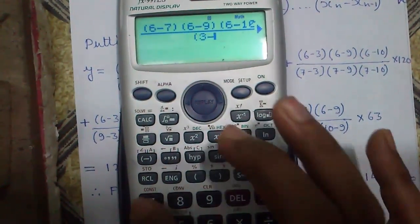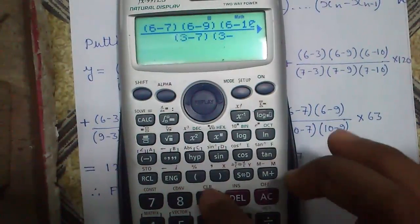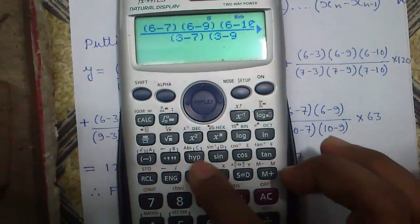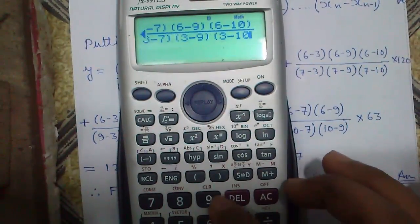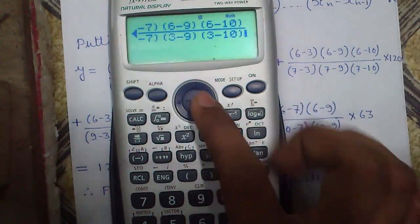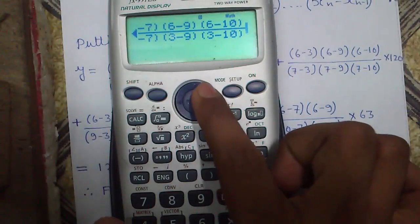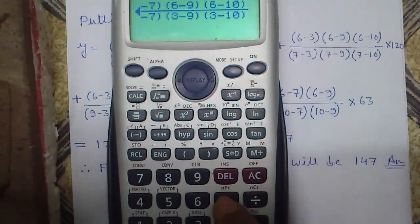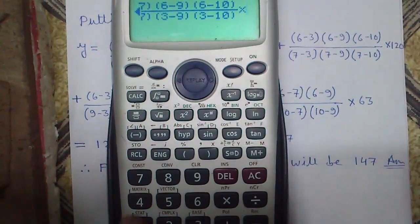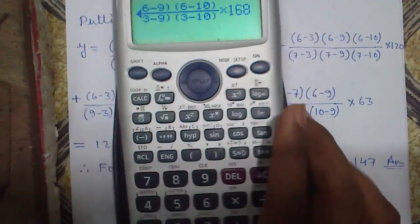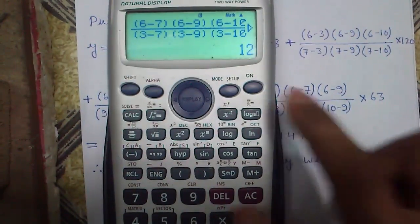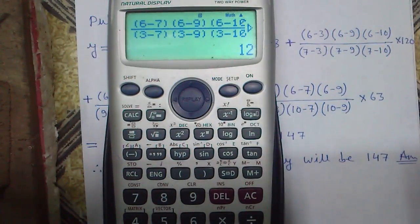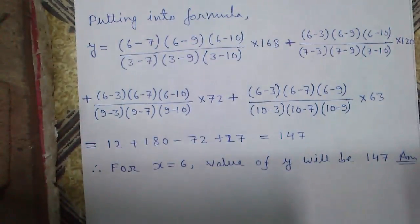You can see, again first bracket, 3 minus 7, 3 minus 9, and 3 minus 10. So 3 minus 7, 3 minus 9, and 3 minus 10, and press joystick right to bring the cursor up and press times 168 and press equals. So that will give you 12 directly without doing any calculation manually.